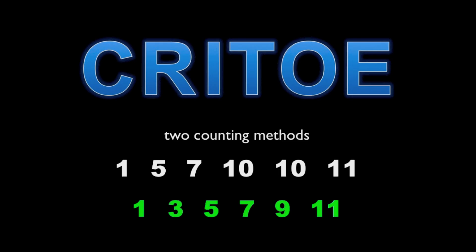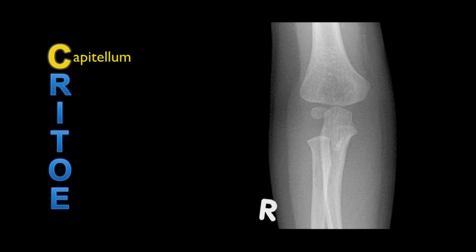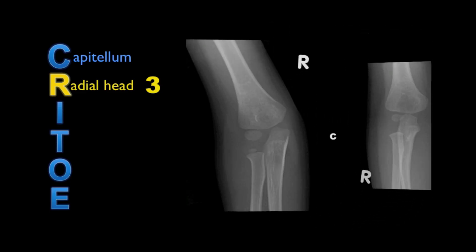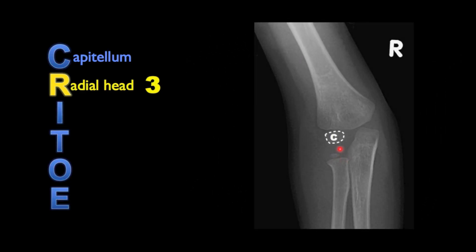So let's take a look at what each of the letters in CRITOE stand for. C is for capitellum, which is the first ossification centre to appear at around age 1. You can see it here in this child. The second ossification centre to appear, R, is for radial head, appearing at around age 3. This child has not yet developed a radial head, but if we switch to a slightly older child we can see a radial head ossification centre developing in its normal location.